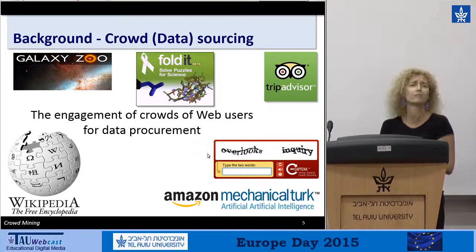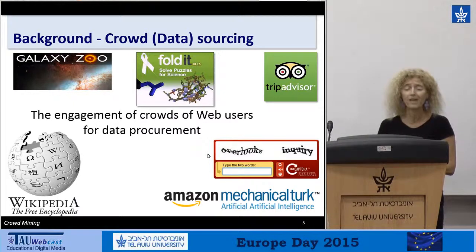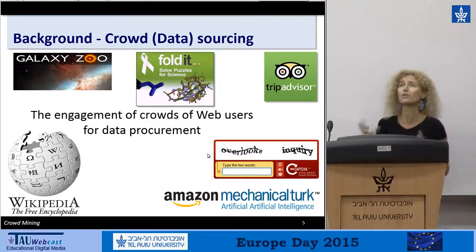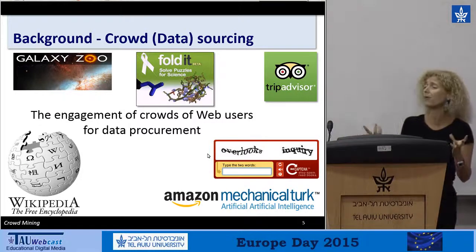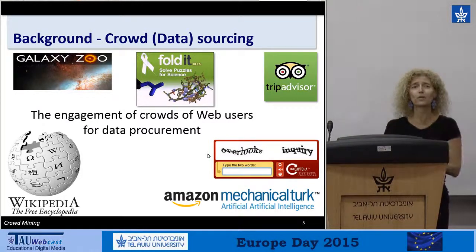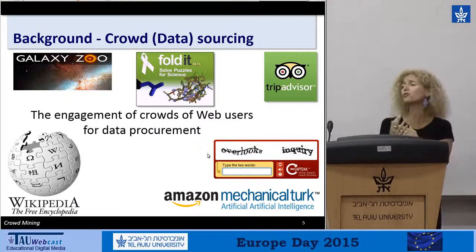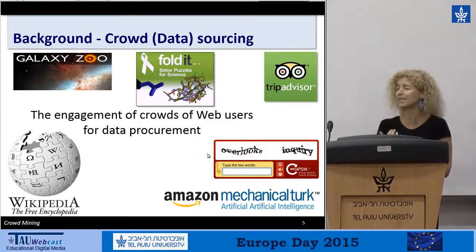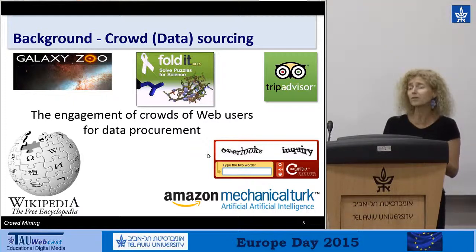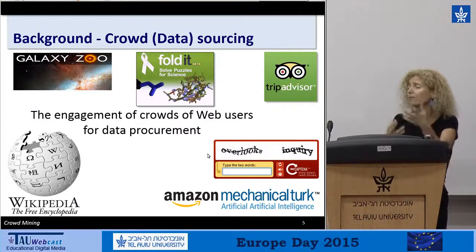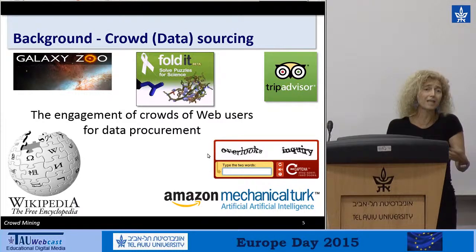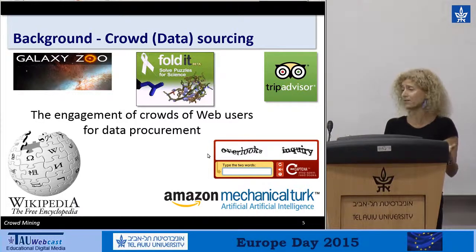Does anyone know Galaxy Zoo? It's actually one of the favorite games of my younger son. The game shows you pictures taken by the Hubble Telescope — galaxies in the pictures — and you have to quickly answer questions like: is this galaxy oval? Is it round? Is it red? Behind the scenes, from the answers of the players, a big database is constructed with properties of galaxies. Researchers looking for galaxies with different properties can use this database, which was actually constructed by my son and other players.